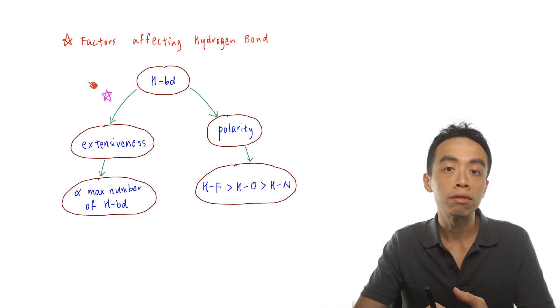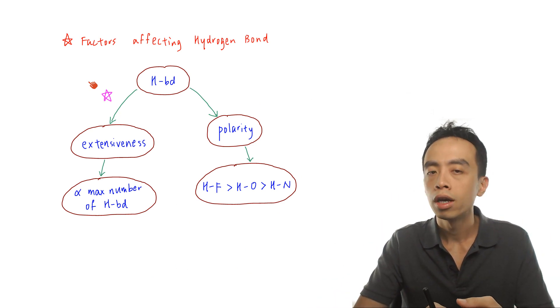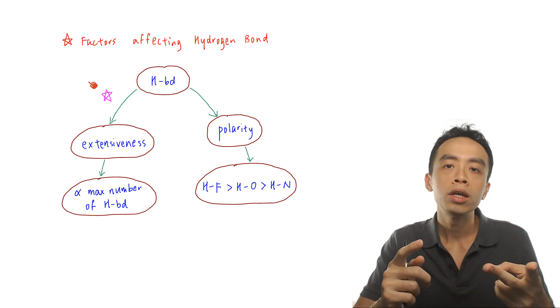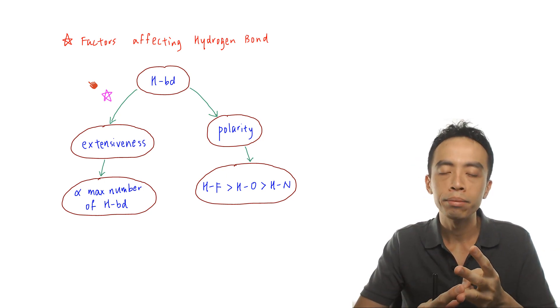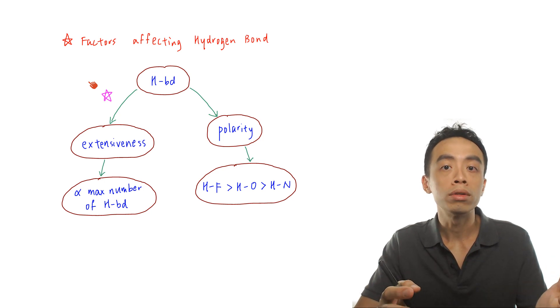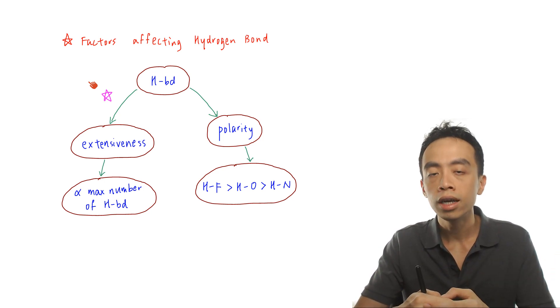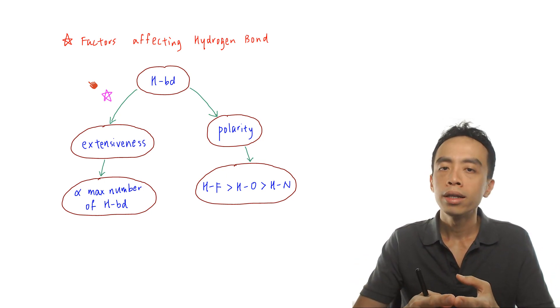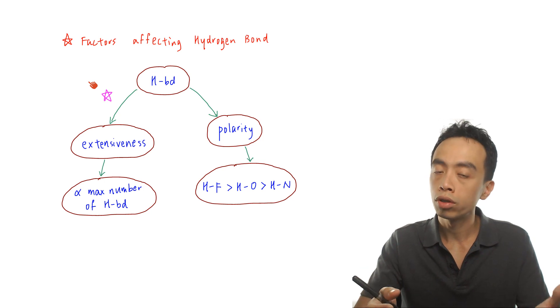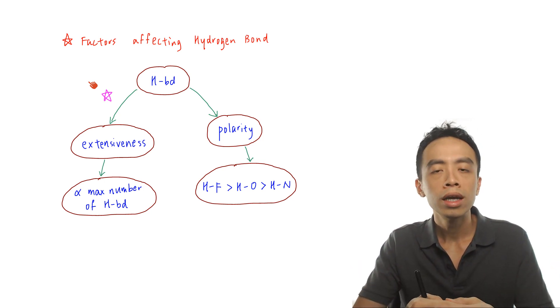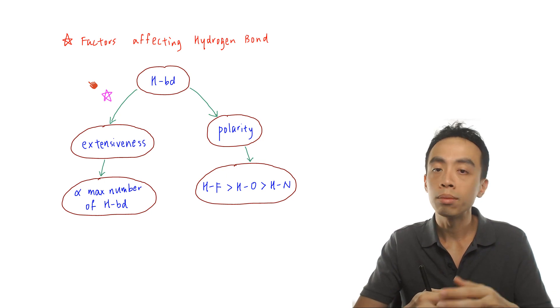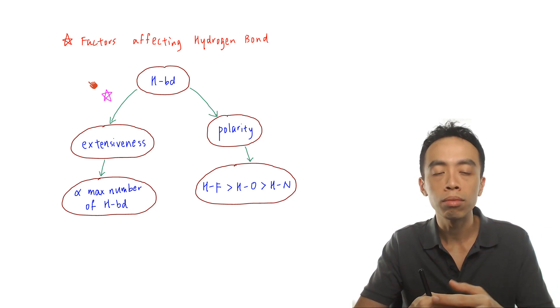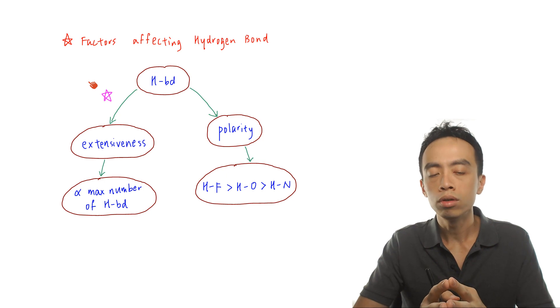In this video we want to spend a bit of time to go through the factors affecting hydrogen bonds. Molecules that can form hydrogen bond between molecules will be molecules that contain H-F bond, H-O bond, and H-N bond. So in general when a molecule contains any of these three bonds, the intermolecular interaction between these molecules would be hydrogen bond. Now if you are given two molecules which can both form hydrogen bond, how do we decide which has a higher boiling point or melting point? The factors affecting hydrogen bond will be discussed here.